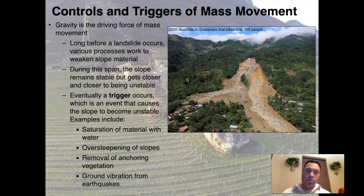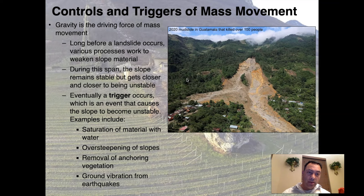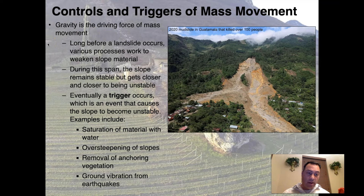In terms of controls and triggers for mass movement, there are several we need to keep in mind — these account for almost all landslides on planet Earth. First and foremost, gravity is the driving force of mass movement. Anything that has any type of involvement other than gravity is a different process.